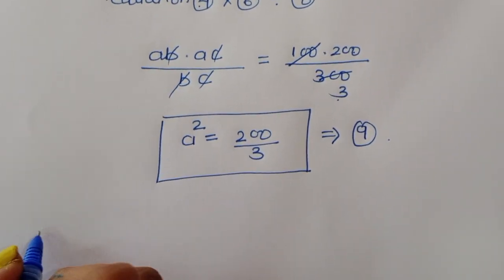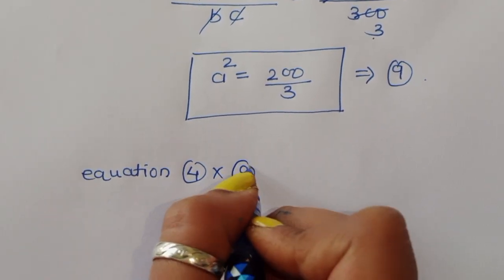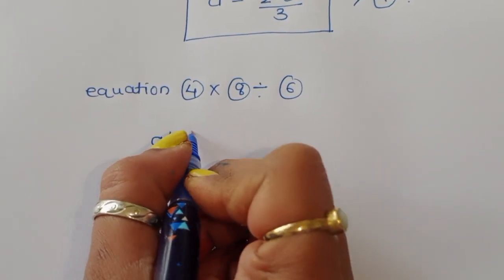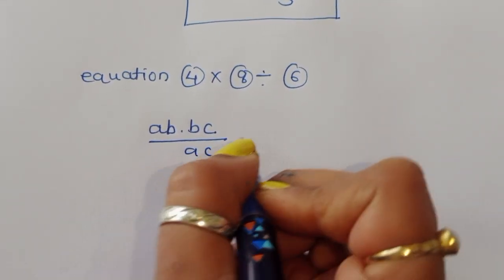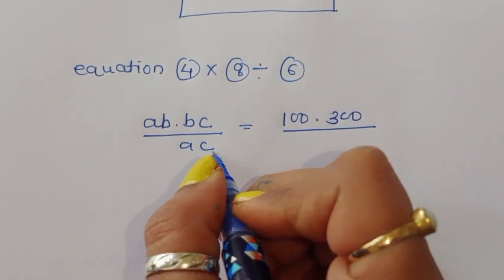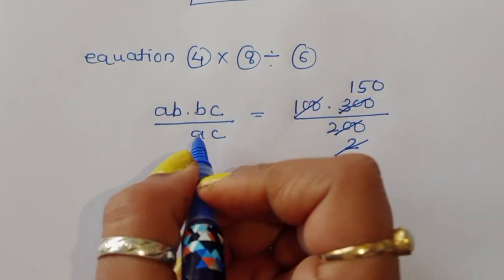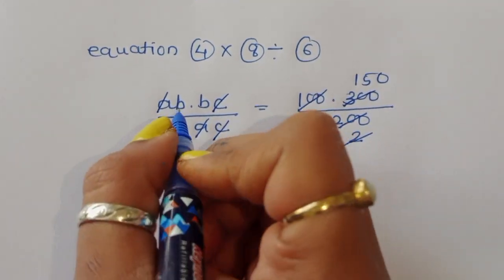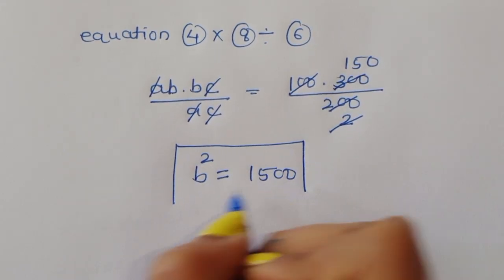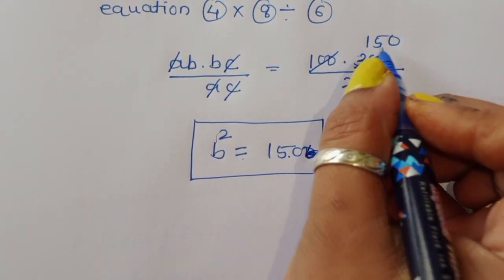Next, multiply equation 4 times equation 8 divided by equation 6: (AB × BC) / AC = (100 × 300) / 200. The A and C cancel, giving B² equal to 150. This is equation 10.